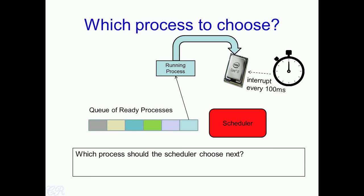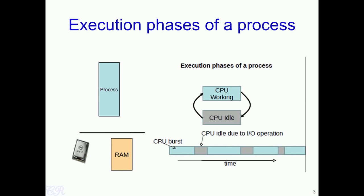To analyze this, we first look at the execution phases of a process. Any program is known to have two phases of execution. One is when it is actually executing instructions, which is known as a CPU burst, while the other is when it is blocked on an IO operation and not doing any useful work — in this case the CPU is idle. Over time, a process alternates between CPU bursts and idle time waiting for IO.